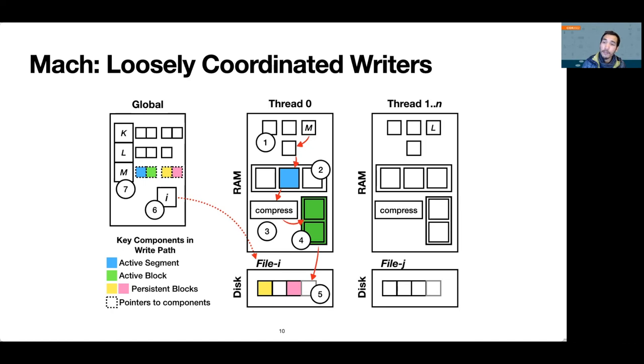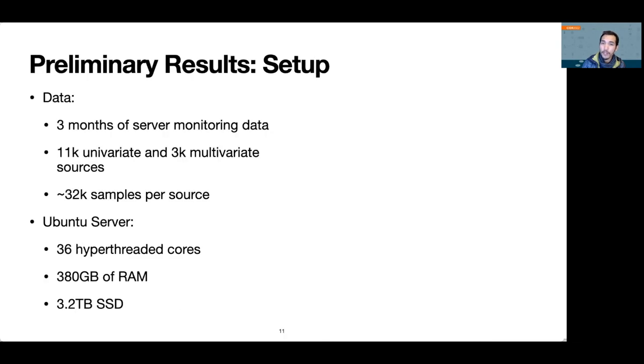Our preliminary evaluations show that with this design, Mach maintains high write throughput across many data sources and maintains recent data in fast memory while persisting historical data to storage. To evaluate Mach's core ideas, we ran experiments using three months of server monitoring data consisting of univariate and multivariate sources with roughly 32,000 samples per source.